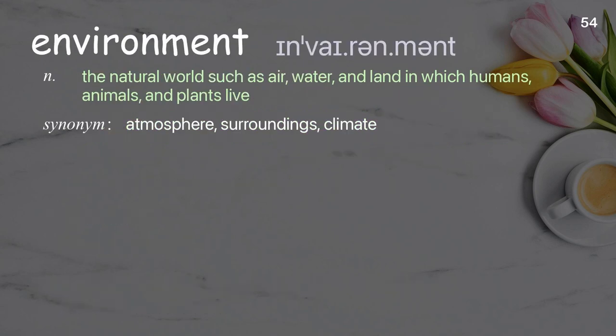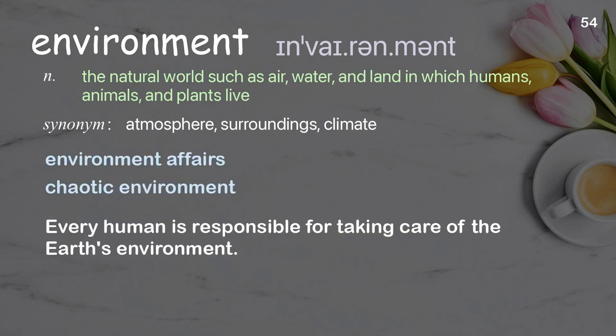Environment: The natural world such as air, water, and land in which humans, animals, and plants live. Examples: environment affairs, chaotic environment. Every human is responsible for taking care of the earth's environment.